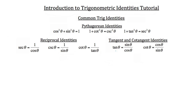Lastly, we have tangent and cotangent identities. The tangent identity: tangent theta is equal to sine theta over cosine theta. And the cotangent identity is that the cotangent of theta is equal to the cosine of theta over sine theta. What I'd like to do next is take a look at some practice problems and show you how we use these.